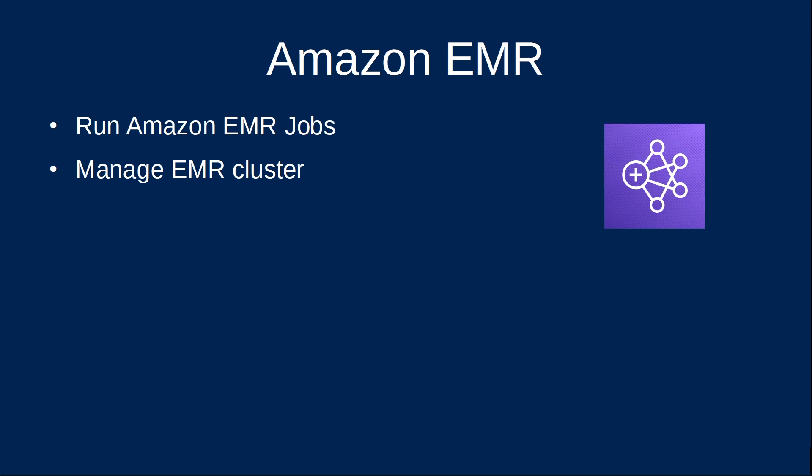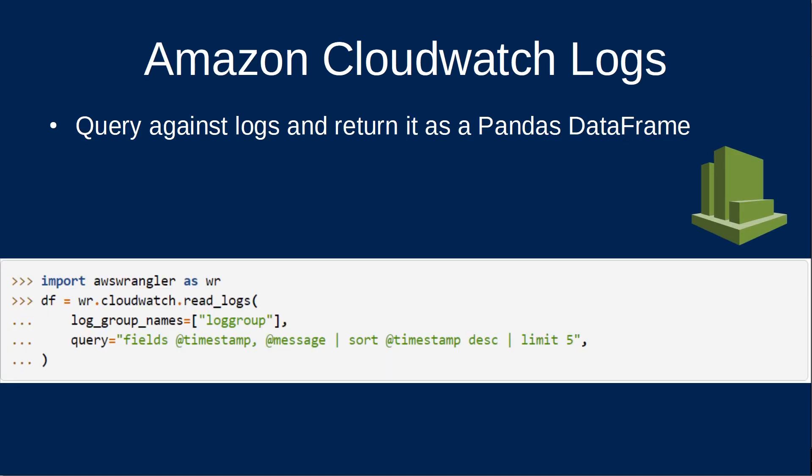Moving to AWS EMR, you can run Amazon EMR jobs and even manage your EMR cluster through code. This might be helpful to keep costs low on EMR by automating when you want to run a job and terminate it when you're done. If you're deep in the trenches of CloudWatch Logs, AWS Wrangler has functions for interacting directly with Amazon CloudWatch Logs, and can query against logs and return results as a Pandas data frame.